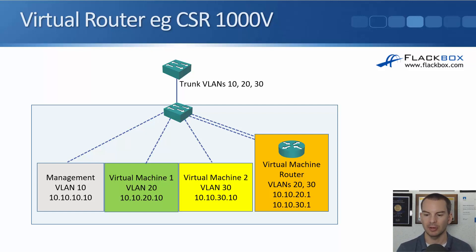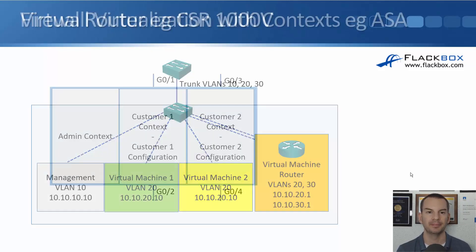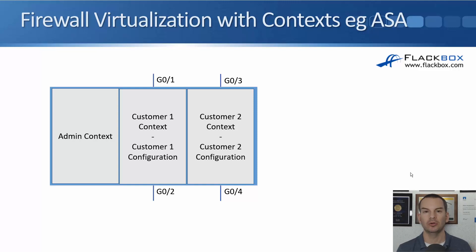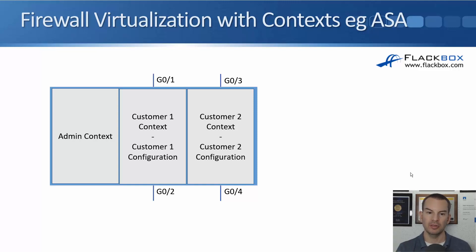Next, let's look at other types of virtualization for network devices — specifically virtualizing firewalls. Cisco has a firewall called the ASA — the Adaptive Security Appliance — and it supports virtualization. The big blue box is a single physical ASA, and we virtualize it by creating separate security contexts.